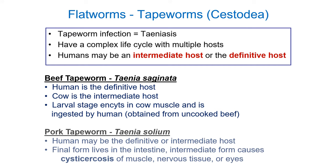For the pork tapeworm, humans can be either an intermediate host or a definitive host — in fact, it's possible to be both at the same time. If you're the definitive host, you'll have the adult sexually mature form in your intestine, just like with the beef tapeworm. If you have the larval form, that makes you the intermediate host, and the larvae will form cysts within your muscle, or perhaps within your nervous tissue or even within your eyes. This condition is known as cysticercosis.